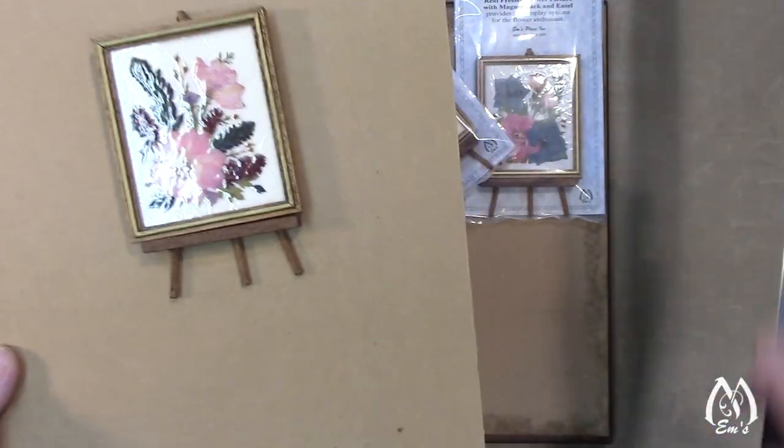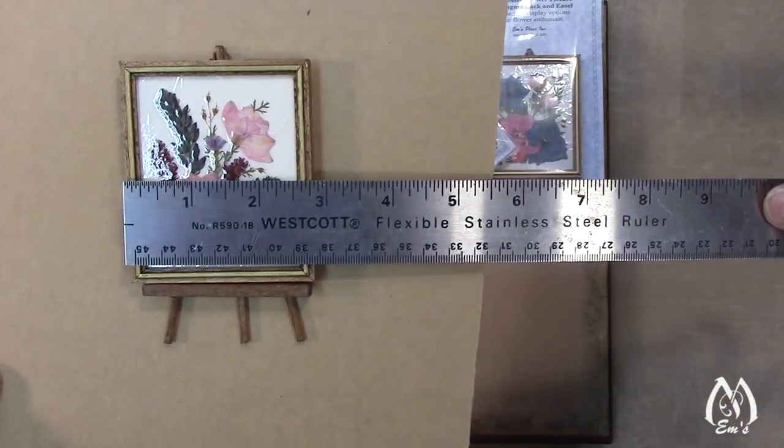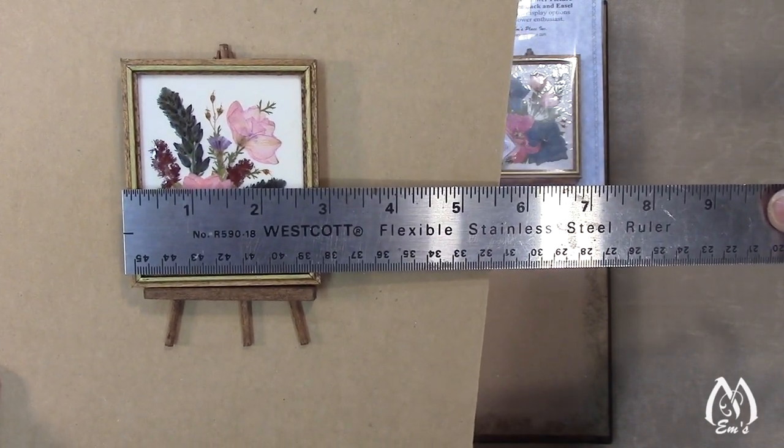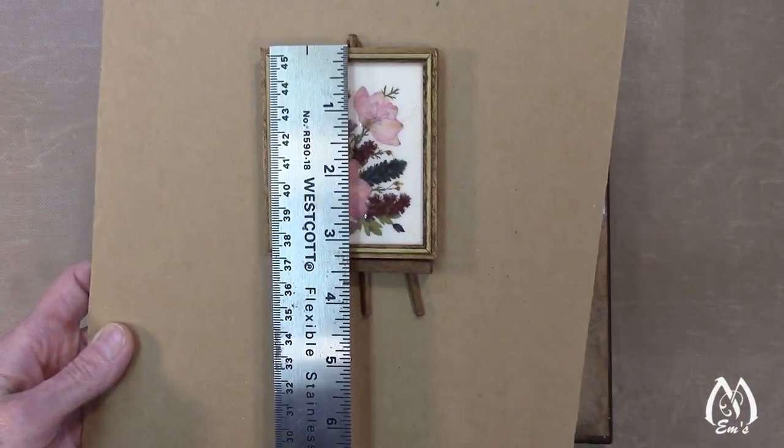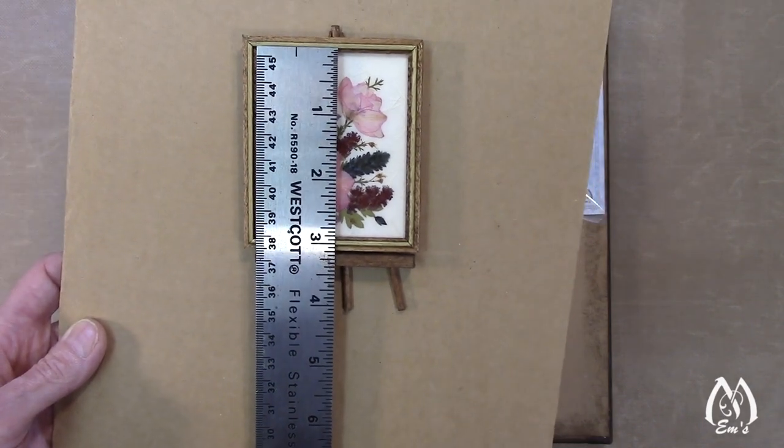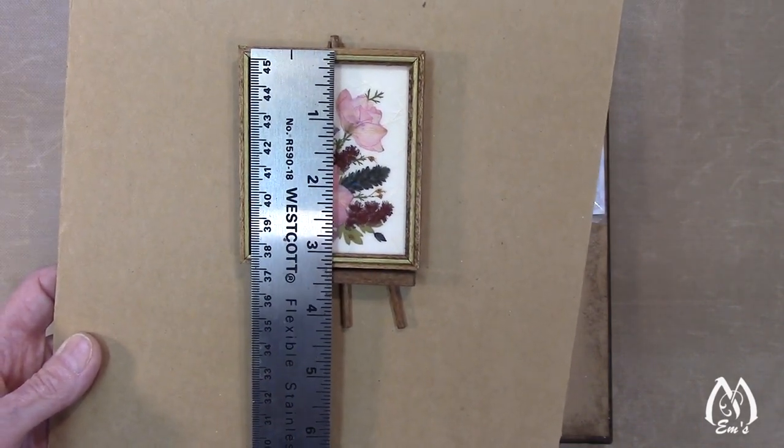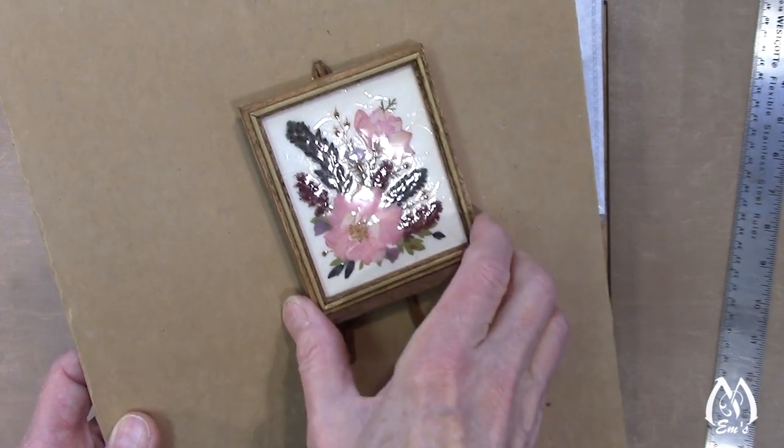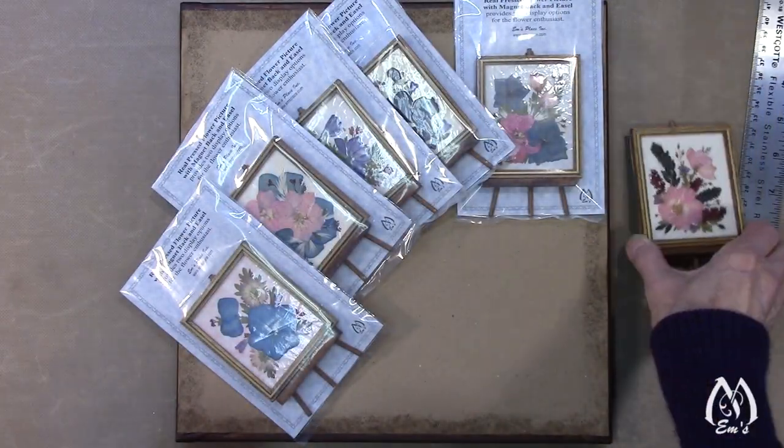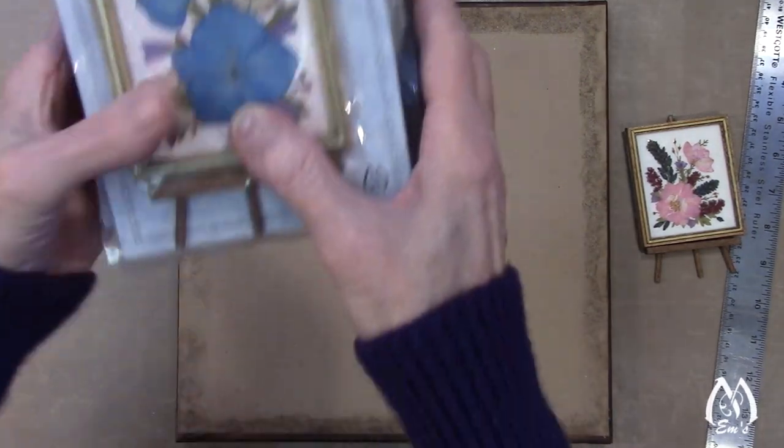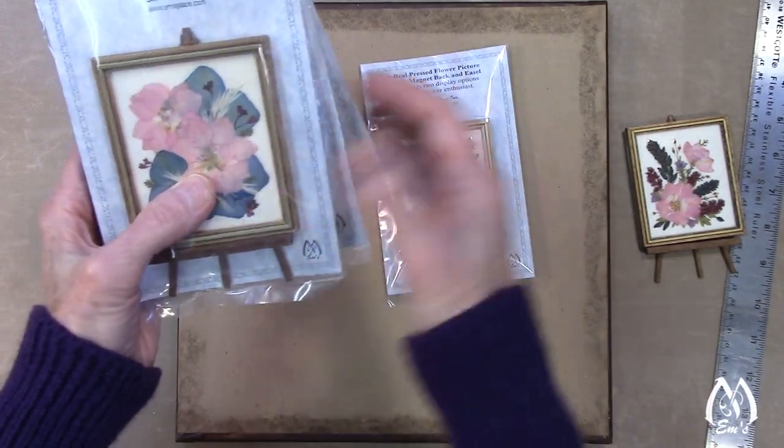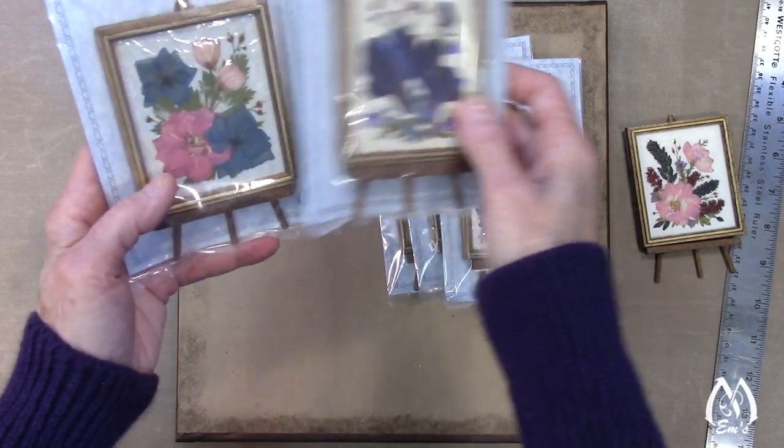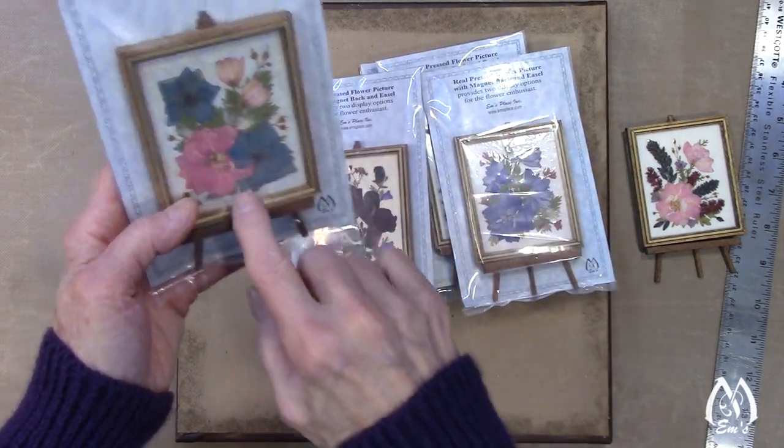So that's what these are, these are just little curio arrangements. Let's see what the size is. It's about two and three quarters by, not including the easel, about three and a quarter. These are real flowers: snapdragons, hydrangea, and larkspur.